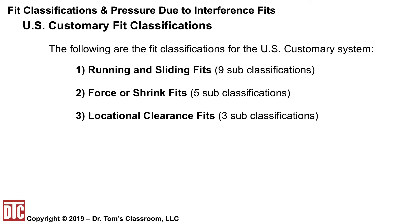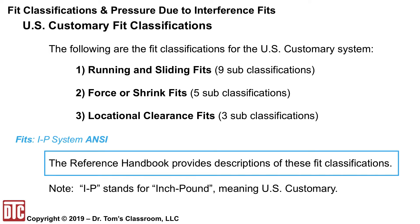For US customary fit classifications, these are the three big areas: running and sliding fits, force and shrink fits, and locational clearance fits. The first one has nine subclassifications, the second five, and the third three. The reference handbook provides descriptions of each of these fit classifications. Note that IP stands for inch-pounds, meaning basically the US customary system.